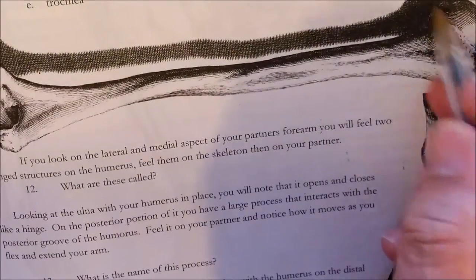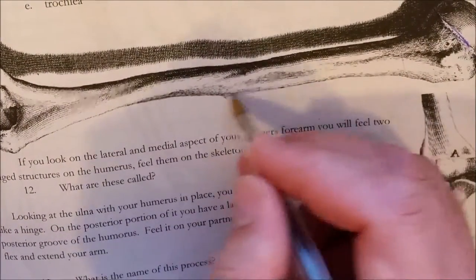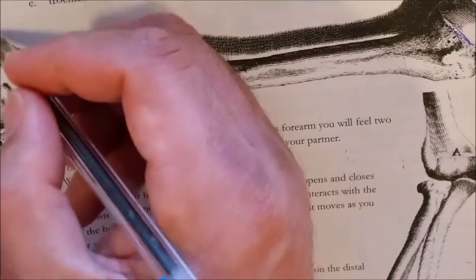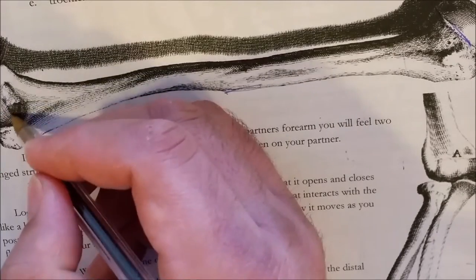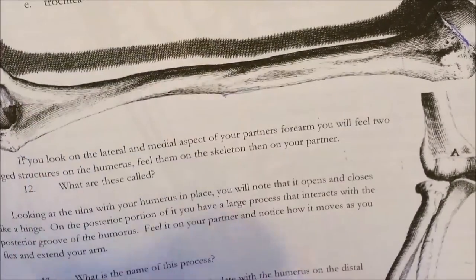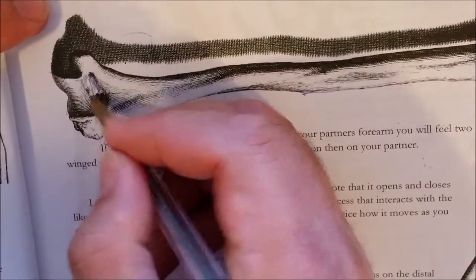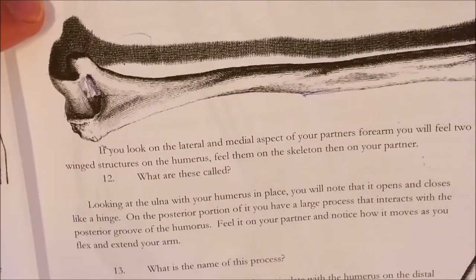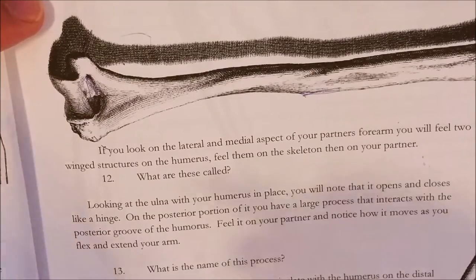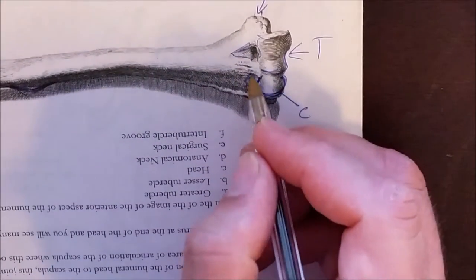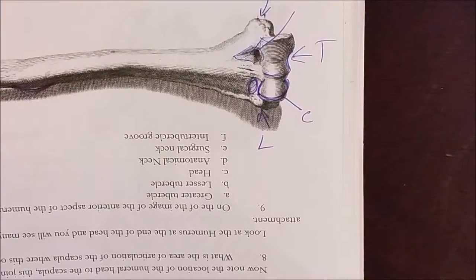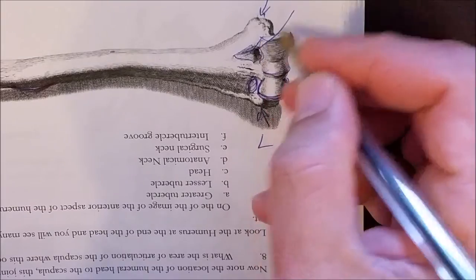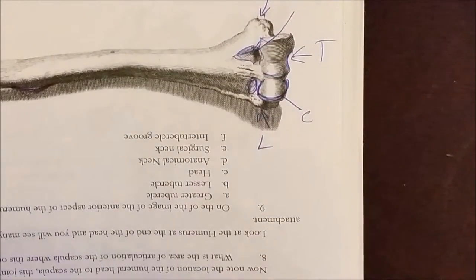Looking at the posterior portion of the humerus, we can see the anatomical and surgical neck, the deltoid tuberosity, the medial and lateral epicondyles, and the trochlea. There is also a large fossa here called the olecranon fossa. On the anterior side there is a radial fossa and a coronoid fossa.